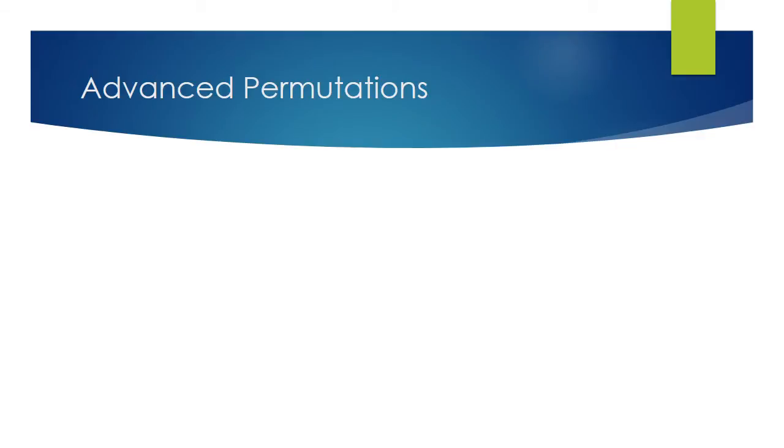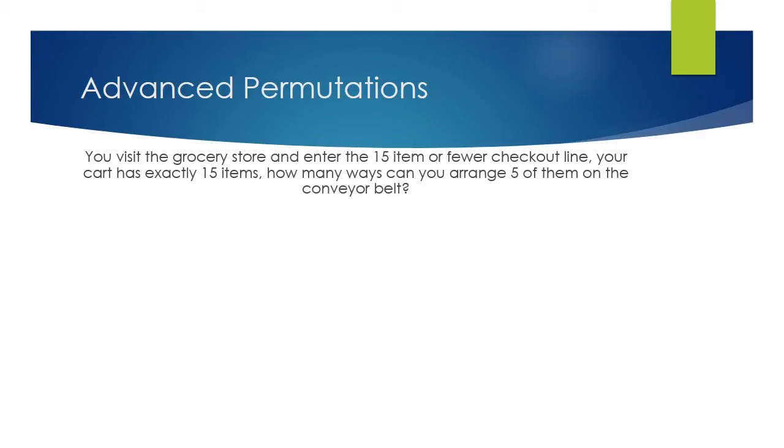So we continue on now to advanced permutations. So let's say that you go to the grocery store, and you're going into the 15 item or fewer checkout line, and your cart has exactly 15 items. How many ways can you arrange five of them on the conveyor belt?